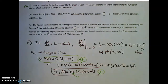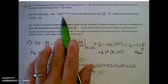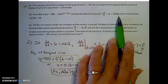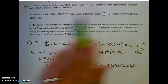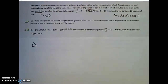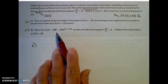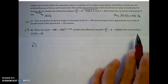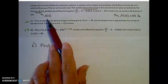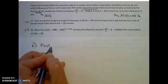Now read part B. We need to show that A(t) equals 300 minus 250e^(0.2 minus 0.02t) satisfies the differential equation with initial condition A(10) equals 50. They're giving us the solution to this differential equation; we just have to confirm it is a valid solution for those initial conditions.